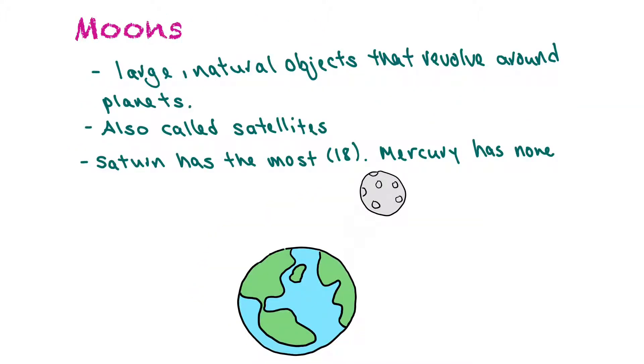Moons are large natural objects that revolve around planets. They're also called satellites. Saturn has the most number of moons at 18, and Mercury has the least at none.